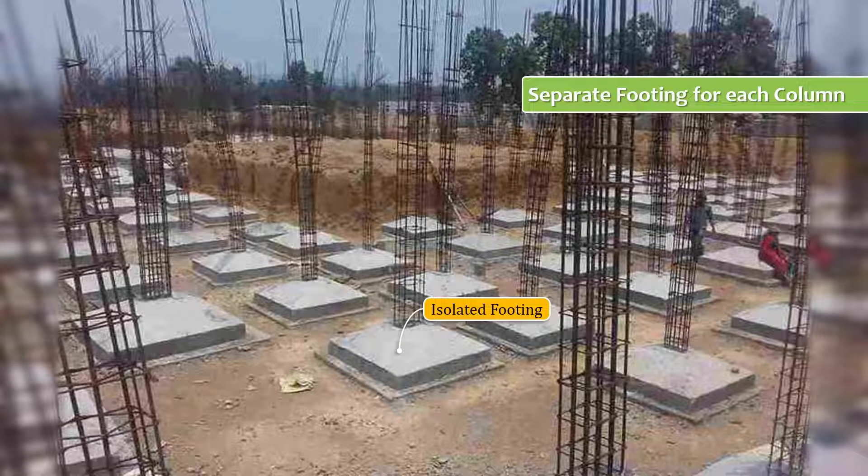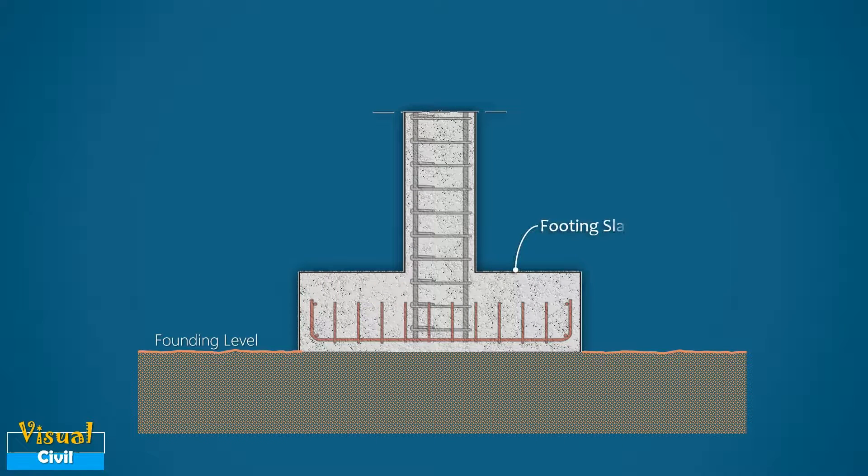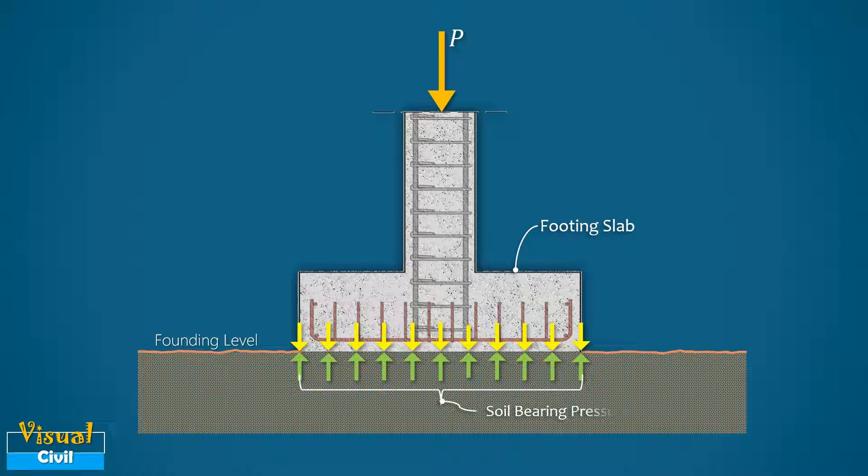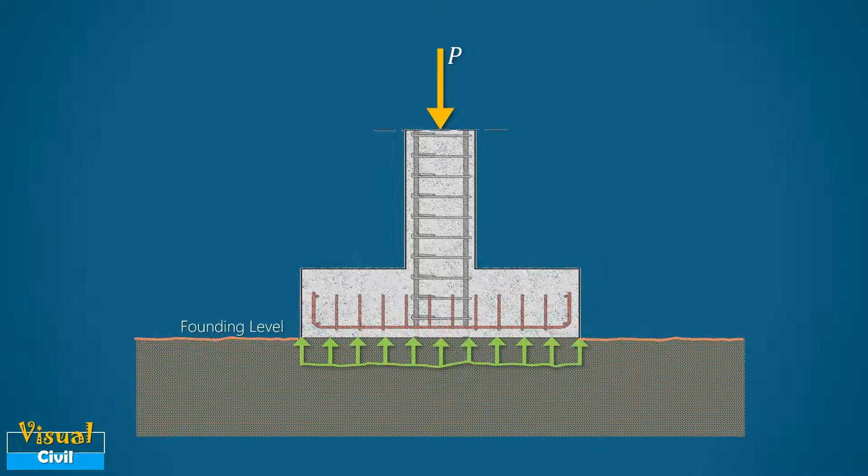It is generally square or rectangular in plan. When the load is transferred by the footing to the founding level, the soil bearing pressures from below tend to make the base slab of the footing bend upwards, and hence it needs to be suitably reinforced by a mesh provided at the bottom side of the footing slab.